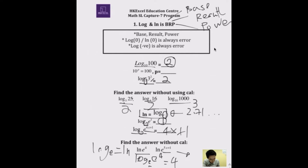LN of e to the power 5X plus 1 — log to the base e, e to the power 5X plus 1. What log calculates is the power, so the answer is 5X plus 1. You can actually solve these kinds of questions faster without fully expanding them.